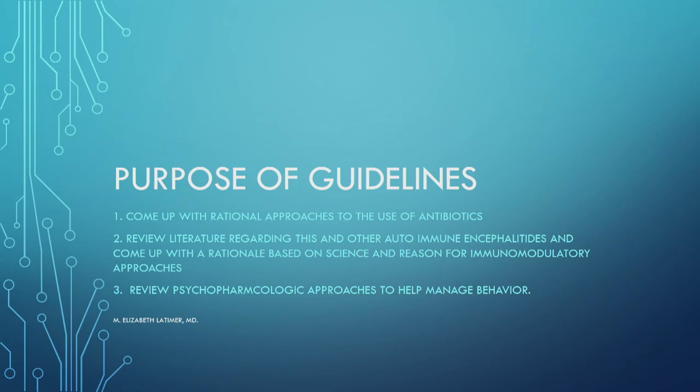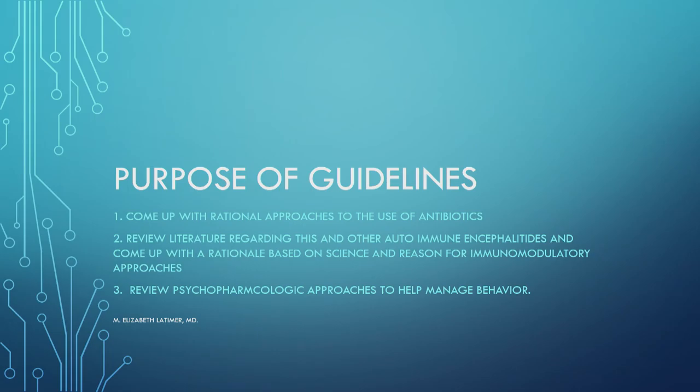A group got together and we decided on a reasonable paradigm of guidelines — what Sue Sweet calls a three-legged stool: the control of the infection propagating this illness, review of the literature regarding other autoimmune encephalitides such as MS, Guillain-Barré, transverse myelitis — we've got a whole bucket load of autoimmune diseases in neurology — and what we do for those and how we could apply those to this condition. And then the review of the psychiatric interventions, including psychopharmacologic approaches to manage behavior and CBT therapies.